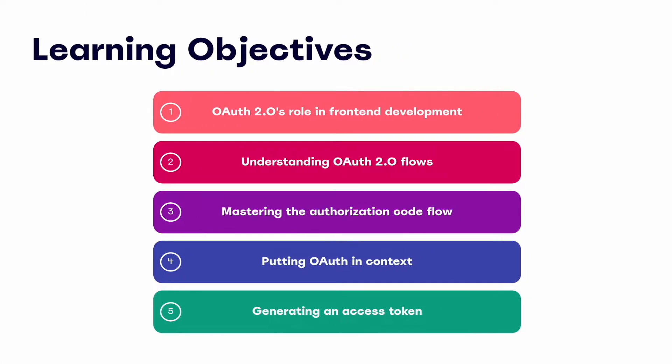Before we dive in, let's quickly walk through today's five learning objectives. First, we'll cover OAuth 2's role in front-end development and why it's valuable. Second, we'll walk through the various OAuth 2 grant types or flows. Third, we'll master the authorization code flow specifically. Fourth, we'll put all this in a front-end context. And finally, we'll generate our first access token using the authorization code flow.